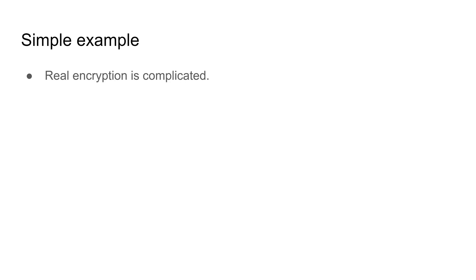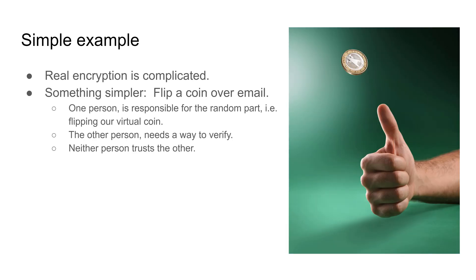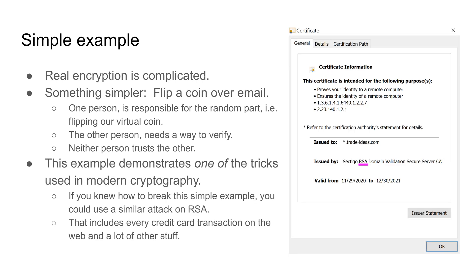Allow me to present a simple example that will show you how encryption works. Alice and Bob don't trust each other and they can only communicate over email. How can Alice and Bob flip a coin virtually? This example will demonstrate one of the tricks of modern cryptography. If you could break this example, you could see every credit card transaction on the web.